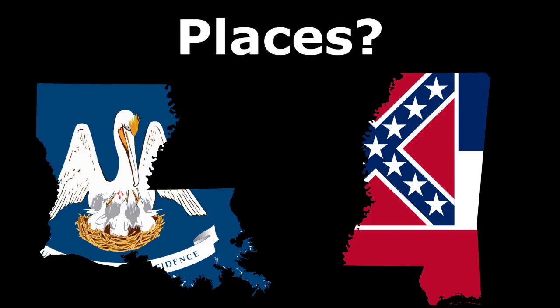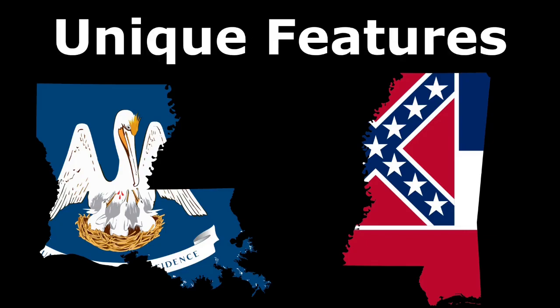What are some characteristics of a place? Well, unique features of a place. The flags of Louisiana and Mississippi are unique features of those places. The culture and the boundaries are also unique features of places.